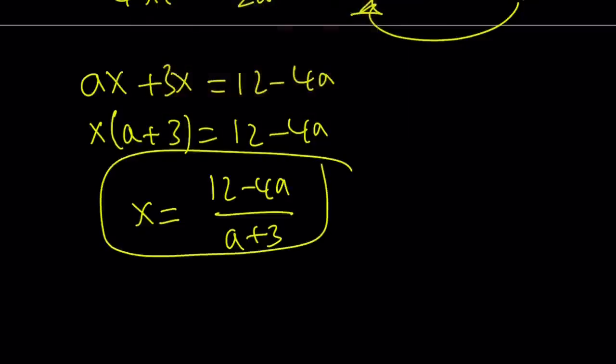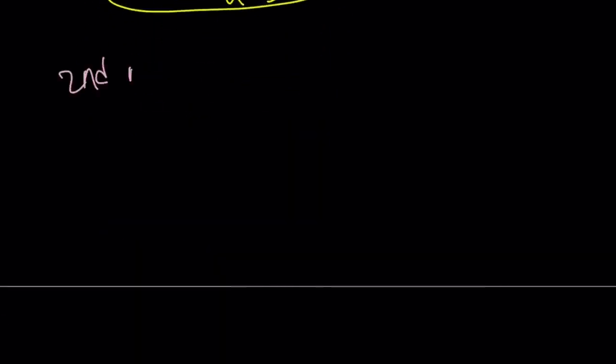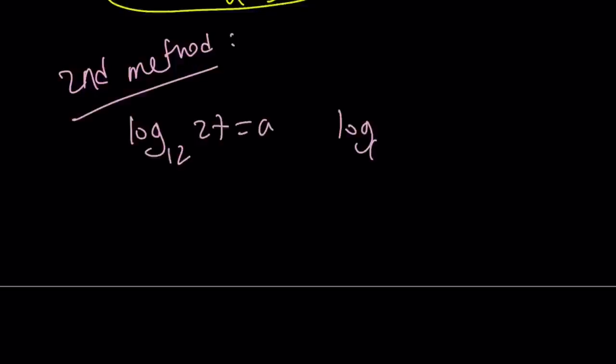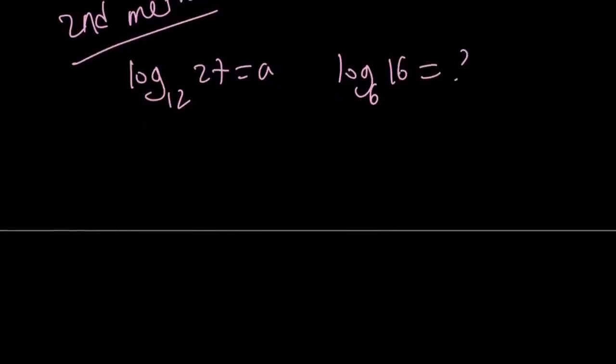Let's talk about the second method. My second method—I don't know if it's shorter or easier, you're going to decide—but here's what we have. Log₁₂ 27 is A, and we're supposed to find log₆ 16, and there are different bases. So here's what I'm going to do. I'm going to use COB formula—change of base. I know somebody used this in the comments, and I'm just stealing it. ln(27)/ln(12) equals A.